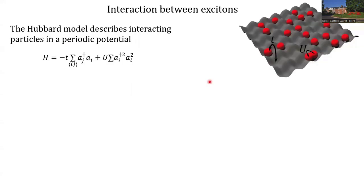The formalism underlying our experiment is the Hubbard model, which describes interacting particles in a periodic potential. It is composed by two terms: a term T that represents the hopping of the particles in the periodic potential, and a term U that accounts for short-range interactions between the particles.